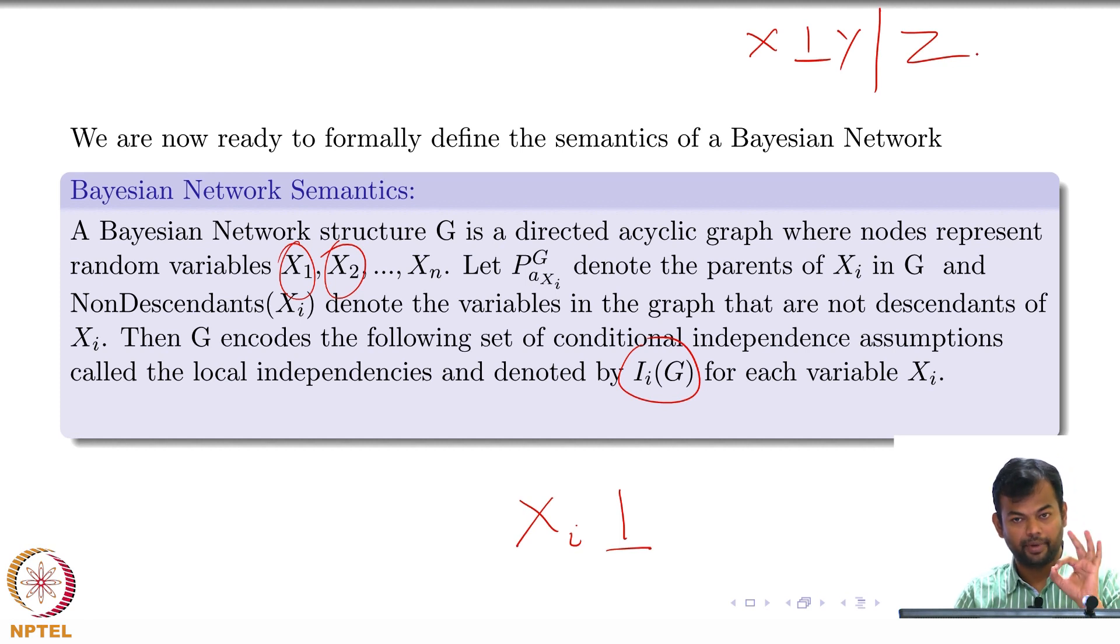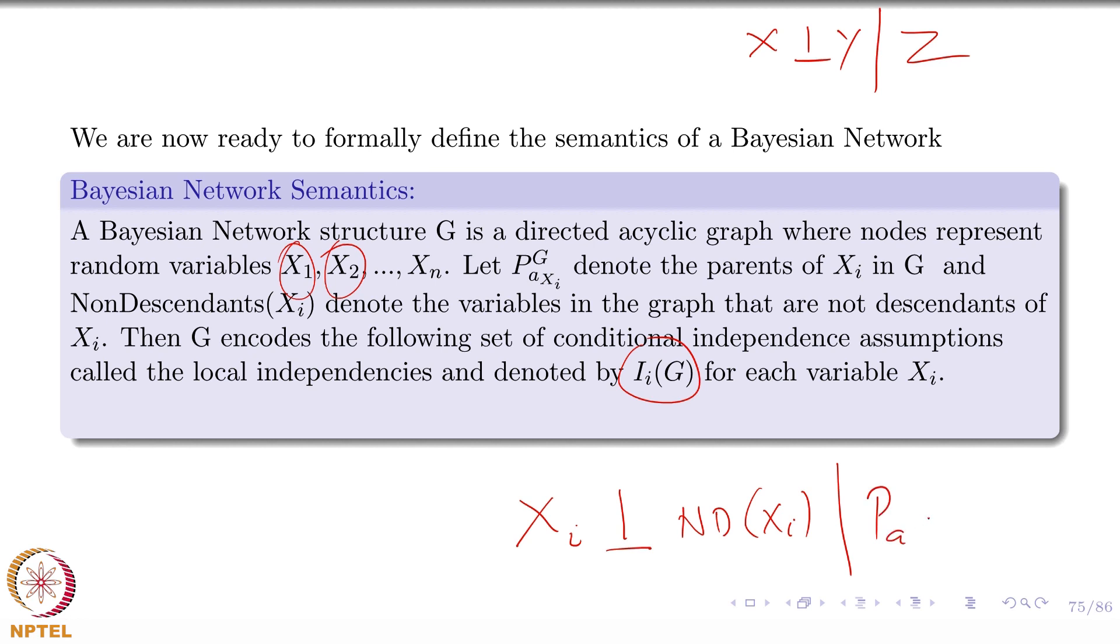So now I am saying that the Bayesian network, for every node that you have, that means for every random variable that you have, it encodes certain independence assumptions. I want to write these three rules that you have seen in a single line. Xi is independent of non-descendants of Xi given parents of Xi. Does that make sense? Does this encompass all the three rules that we have seen?